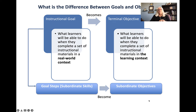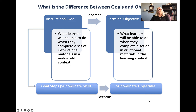So what's the difference between goals and objectives? The instructional goal is what learners will be able to do when they complete a set of instructional materials in a real world context — we call that the performance context. Objectives are written in the training context or the learning context. An instructional goal becomes a terminal objective, and goal steps, which are subordinate skills, we rewrite those to become subordinate objectives.